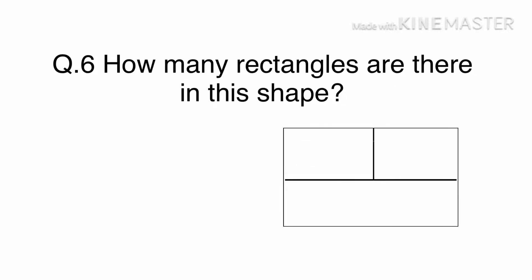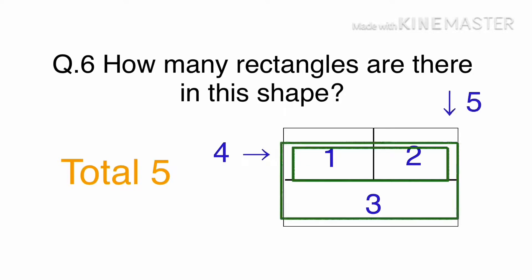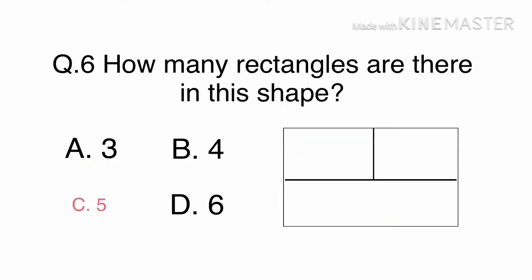Question 6: How many rectangles are there in this shape? A. 3, B. 4, C. 5, or D. 6. Let's count all the rectangles in this shape. In this question, there are 5 rectangles: 1, 2, 3, 4, and 5. The answer is C, 5.